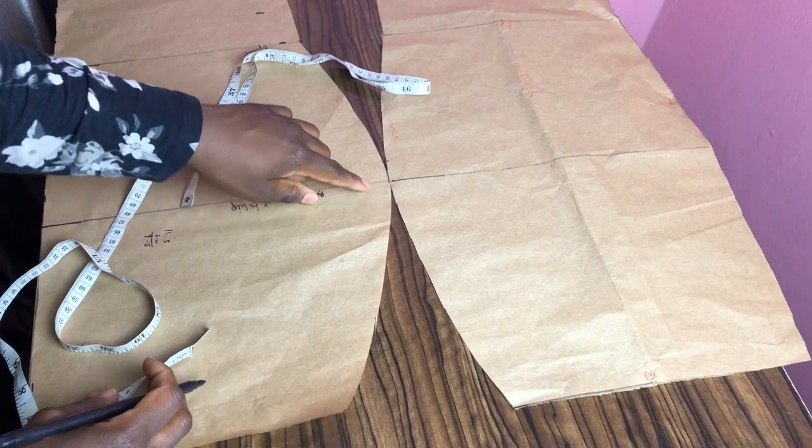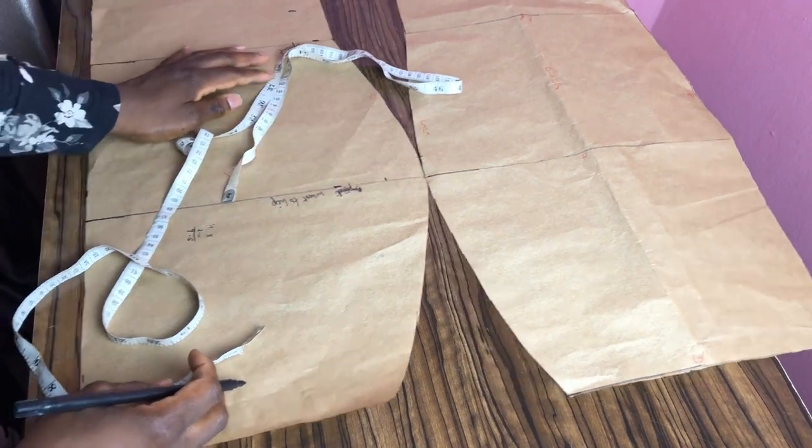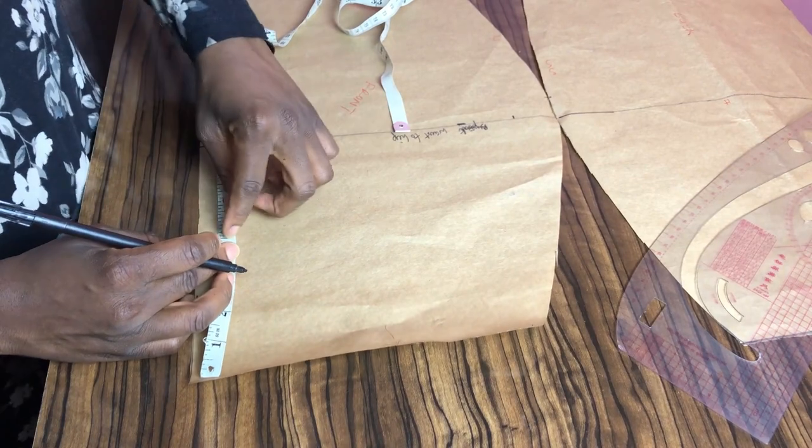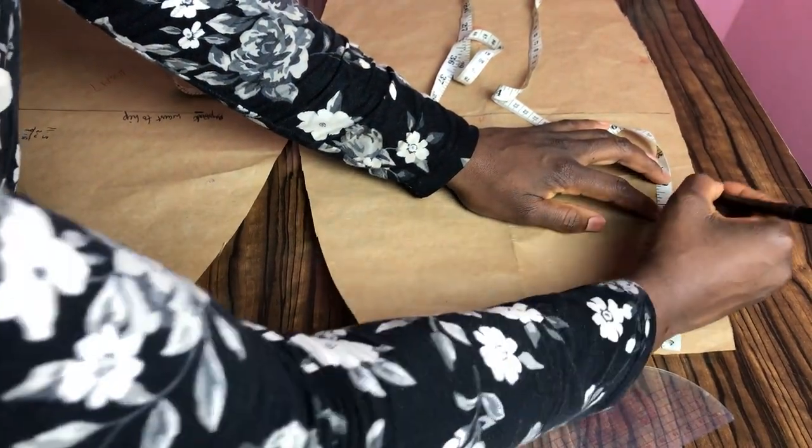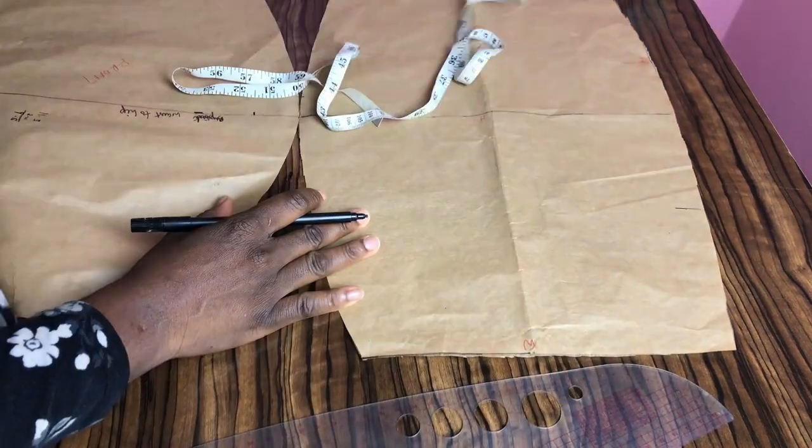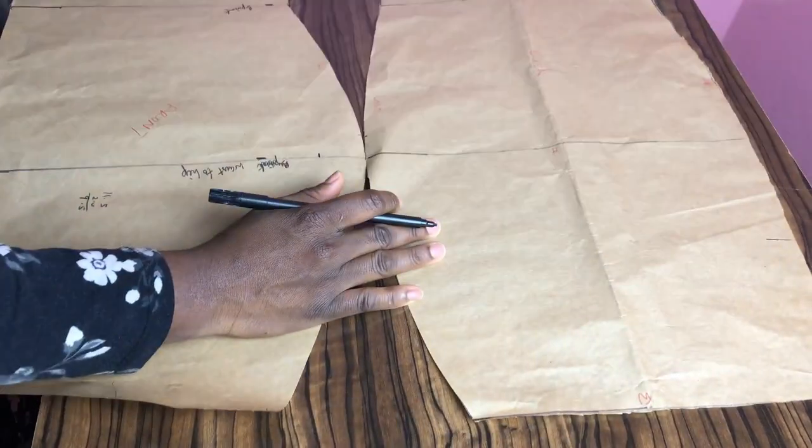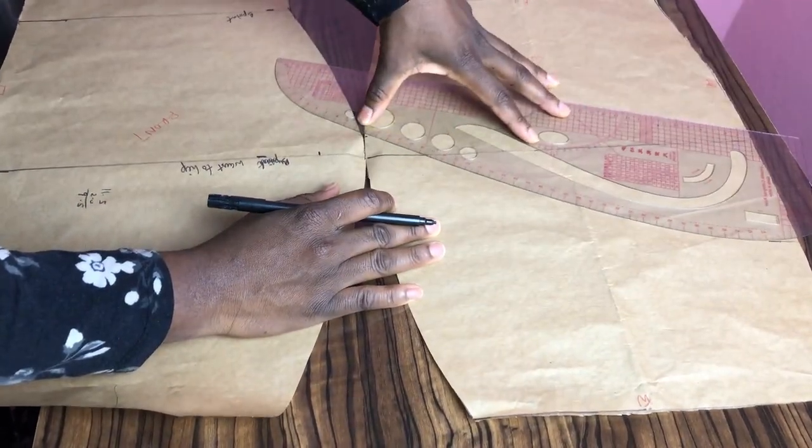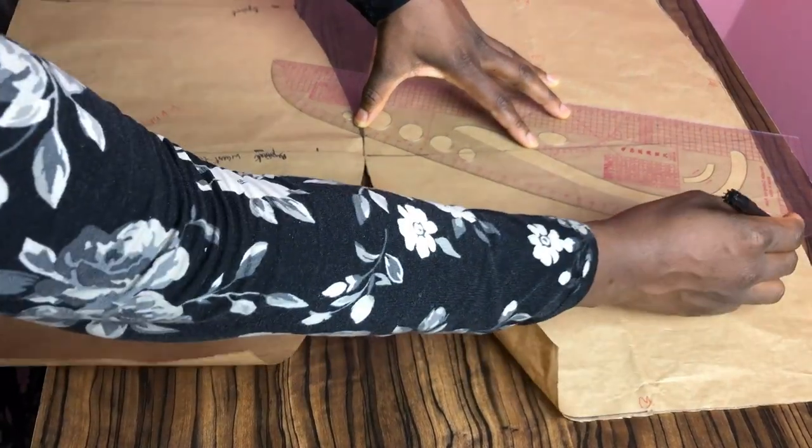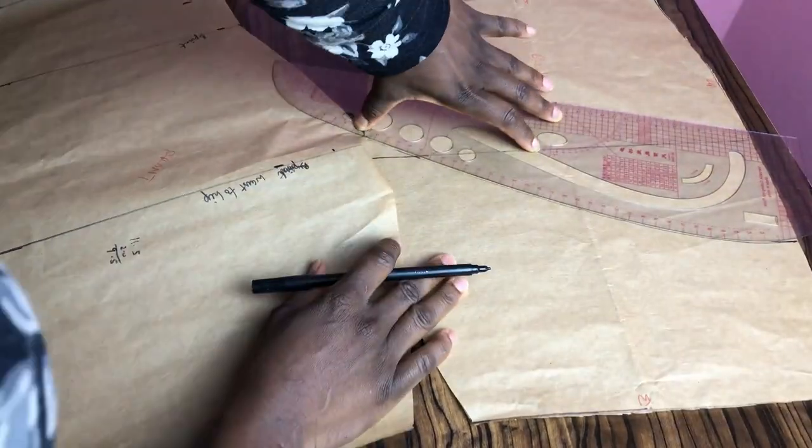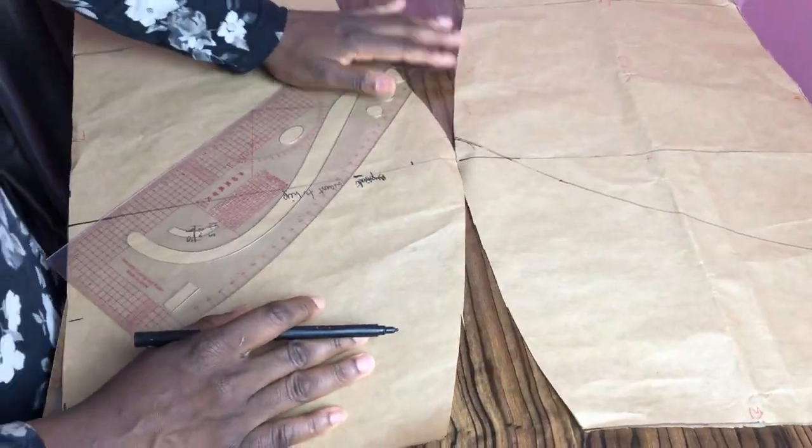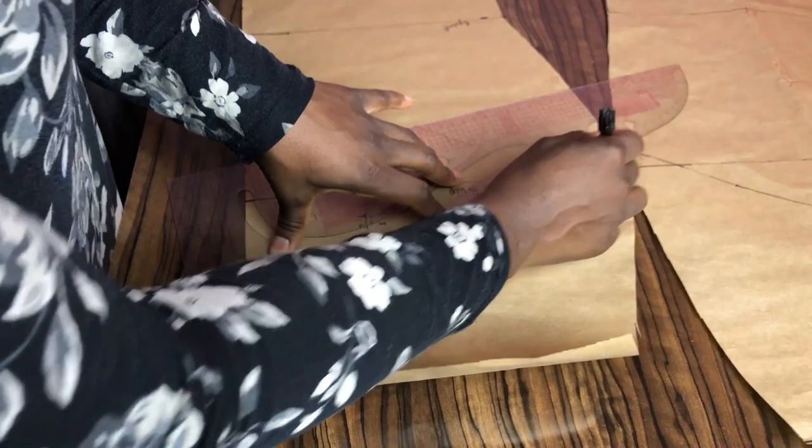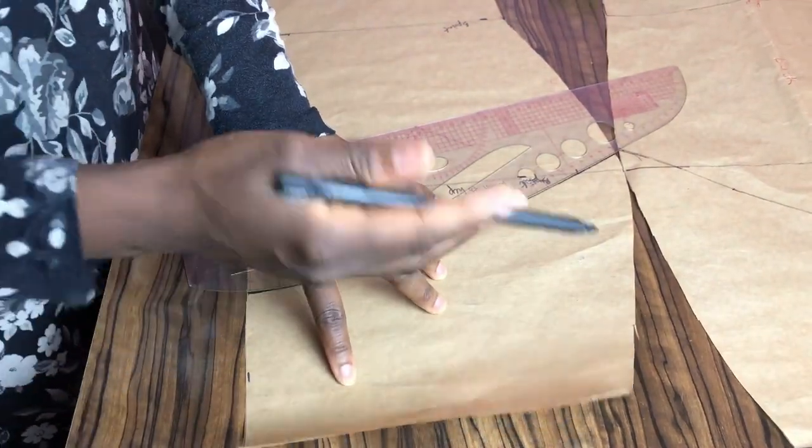So at the center front I marked five inches down from the waist. Again, you can go lower or higher. Then go to the back and mark the same thing. And use your curved ruler or freehand to connect from that point to the hip. The reason I taped this part is to ensure that I am cutting at the same point. That will make it easy to match up the sides when I am sewing.